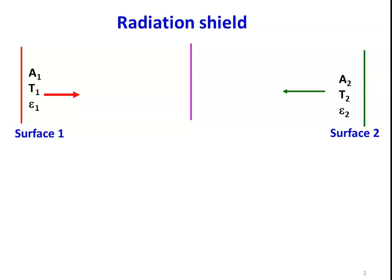Particularly in the nuclear reactor, there is a radiation shield to prevent radiation from the reactor to the surroundings. The radiation shield has the property: A3 is the area, T3 is the temperature, and there are two emissivities — epsilon 31 on the left side facing surface 1, and epsilon 32 on the right side facing surface 2. The shield is very thin, so the temperature and area are equal on both sides.